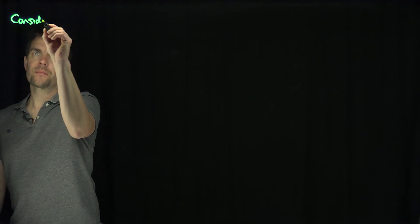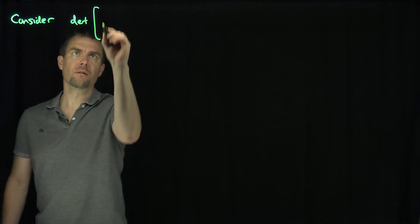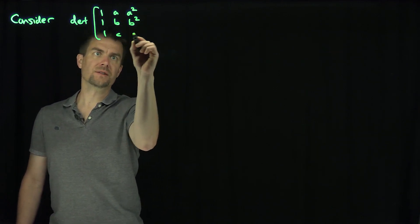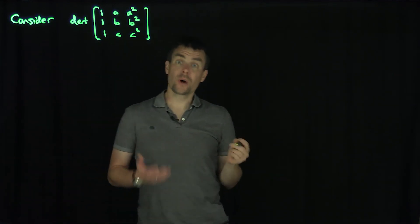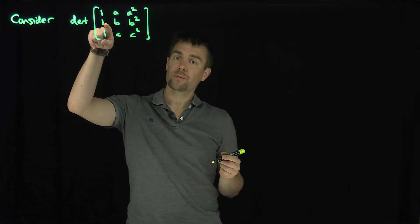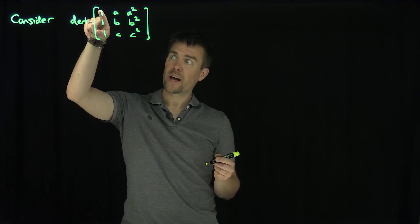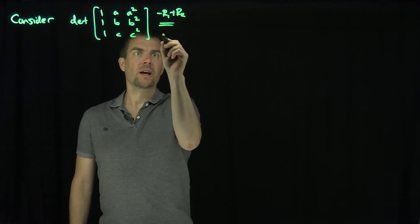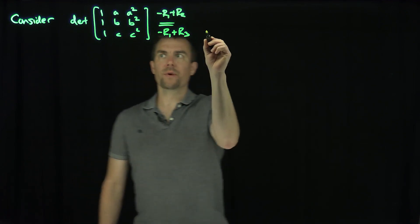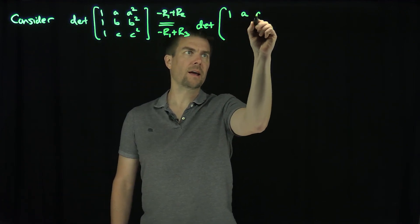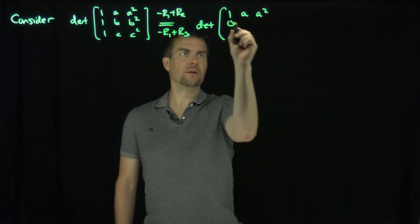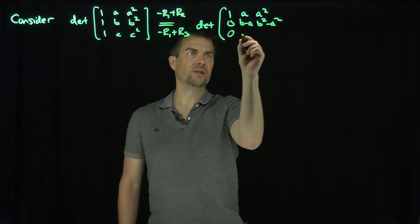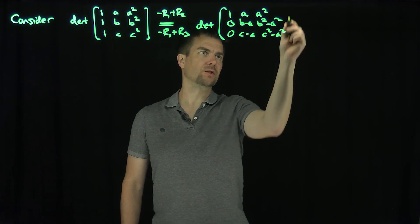As a preliminary step, consider the problem of computing the determinant of the matrix with rows: 1, a, a²; then 1, b, b²; then 1, c, c². We'll apply elementary row operations: negative row 1 plus row 2, and negative row 1 plus row 3. This gives us the determinant of 1, a, a²; then 0, b minus a, b² minus a²; then 0, c minus a, c² minus a².